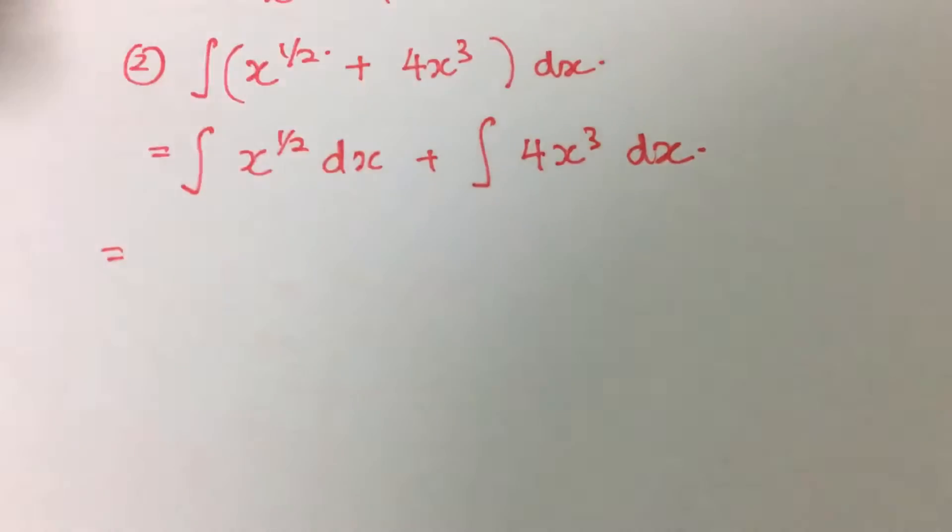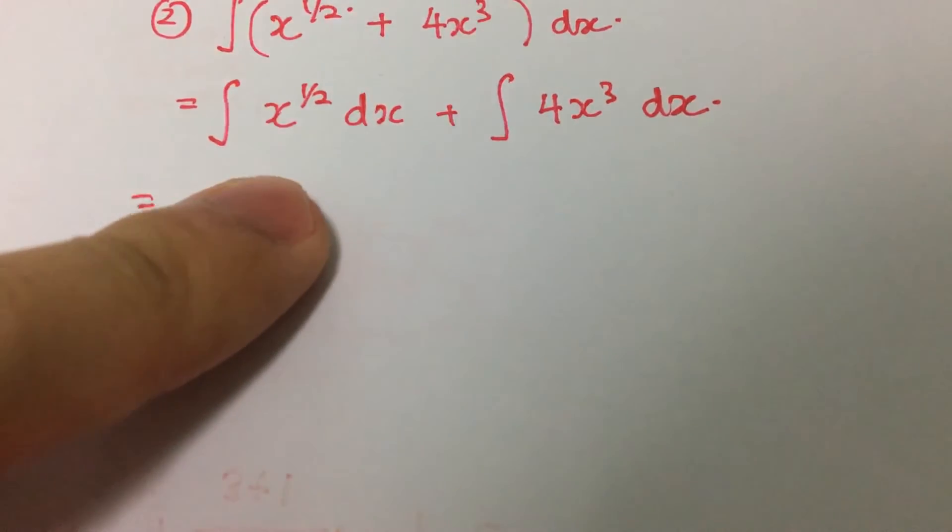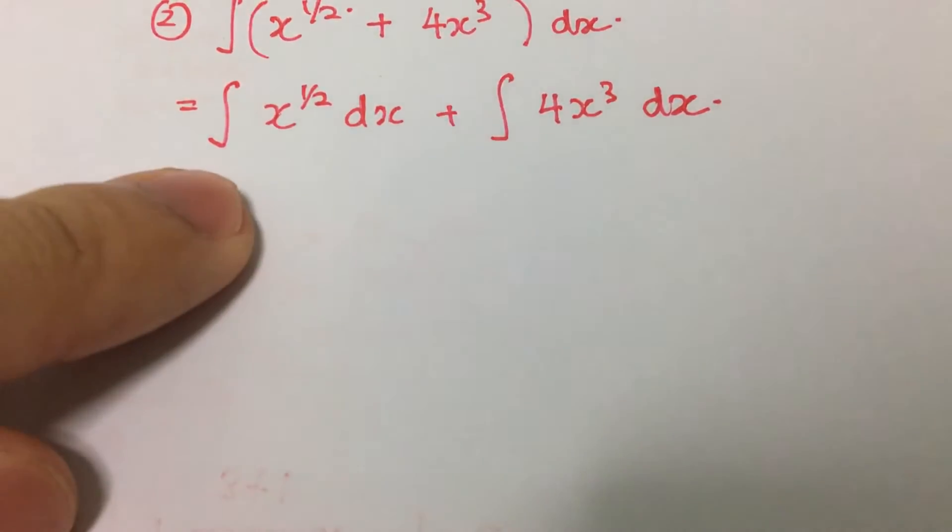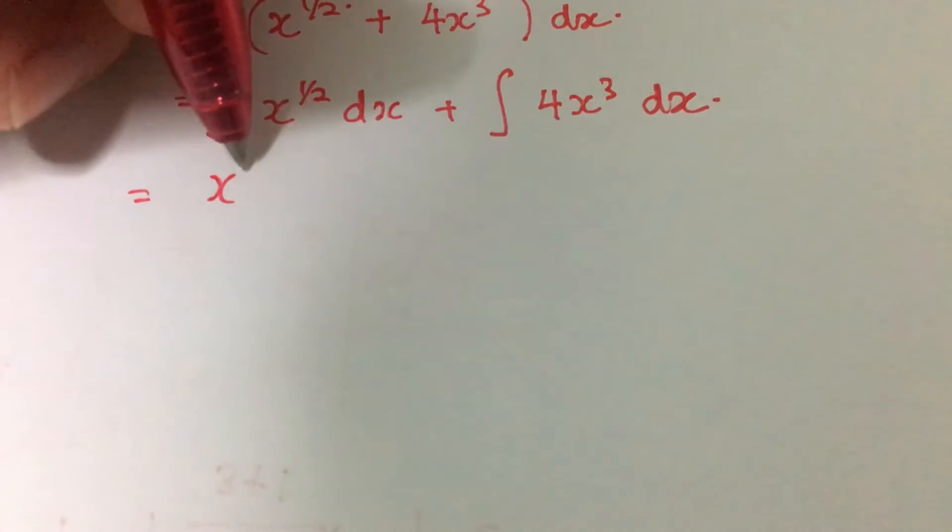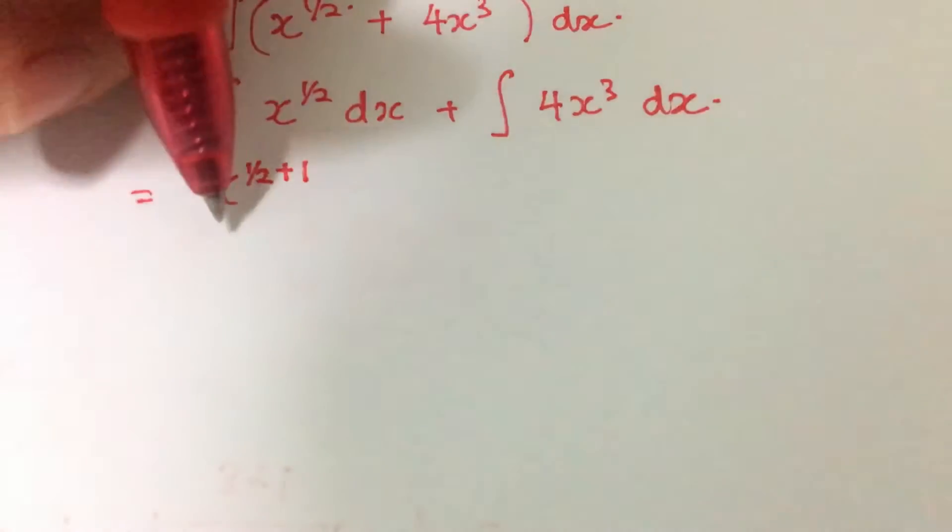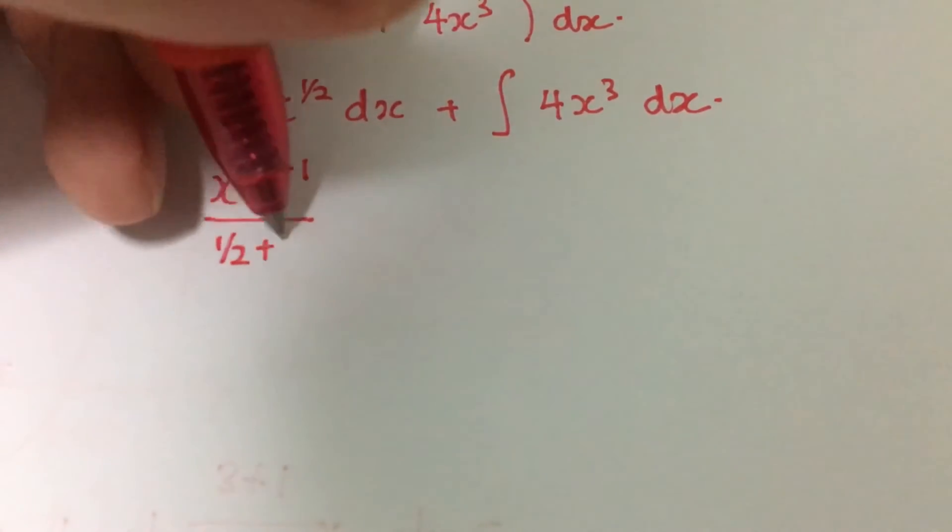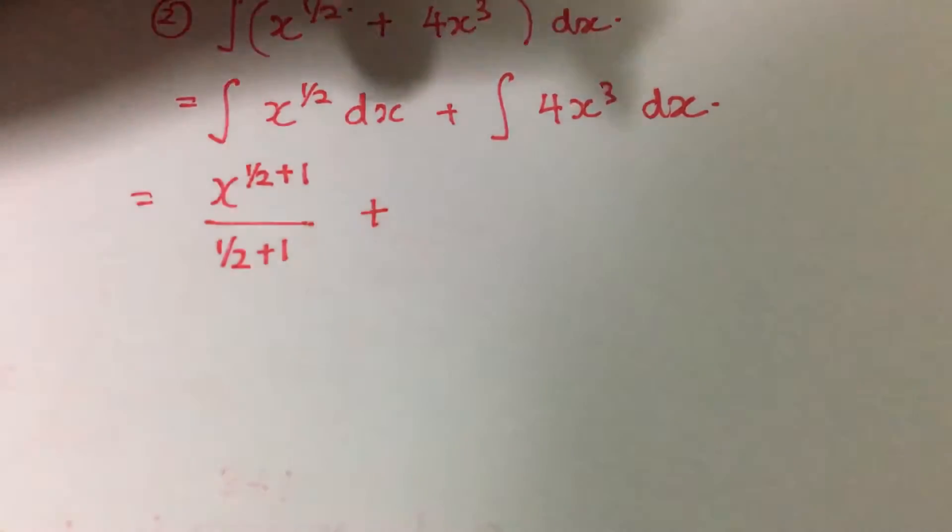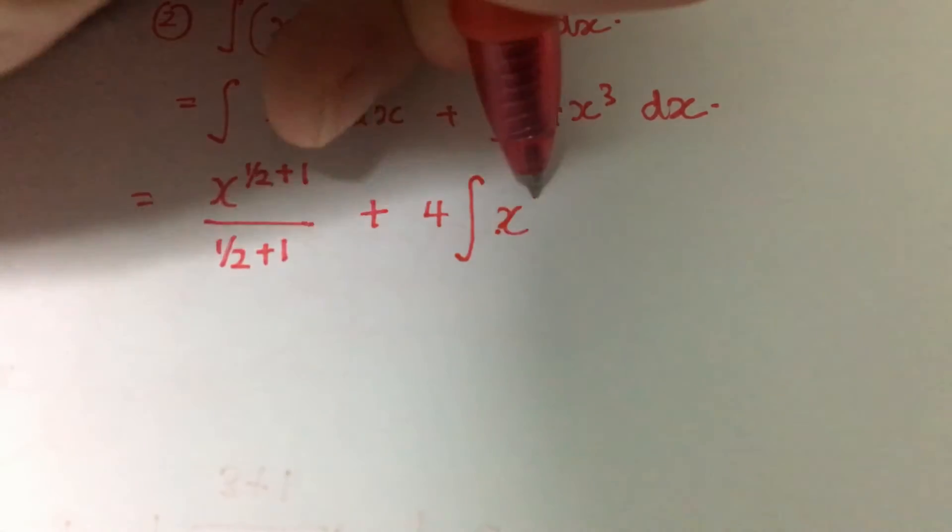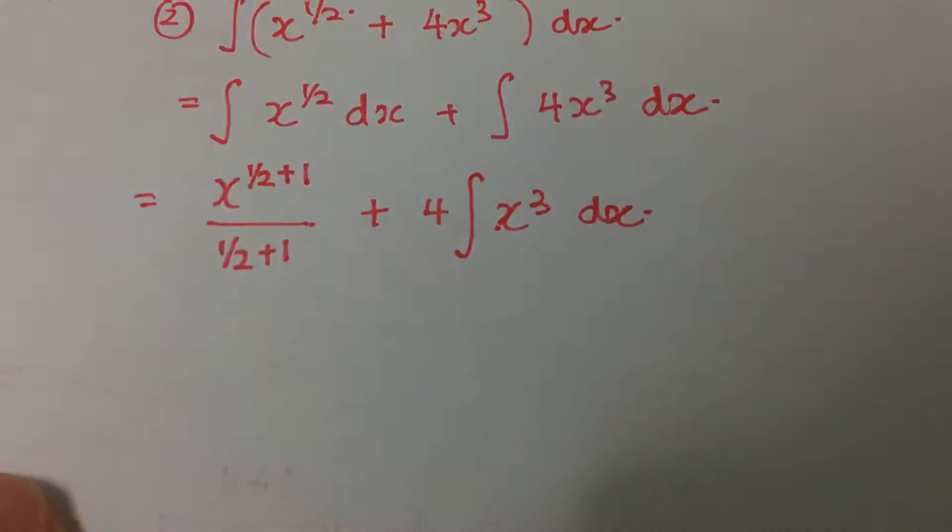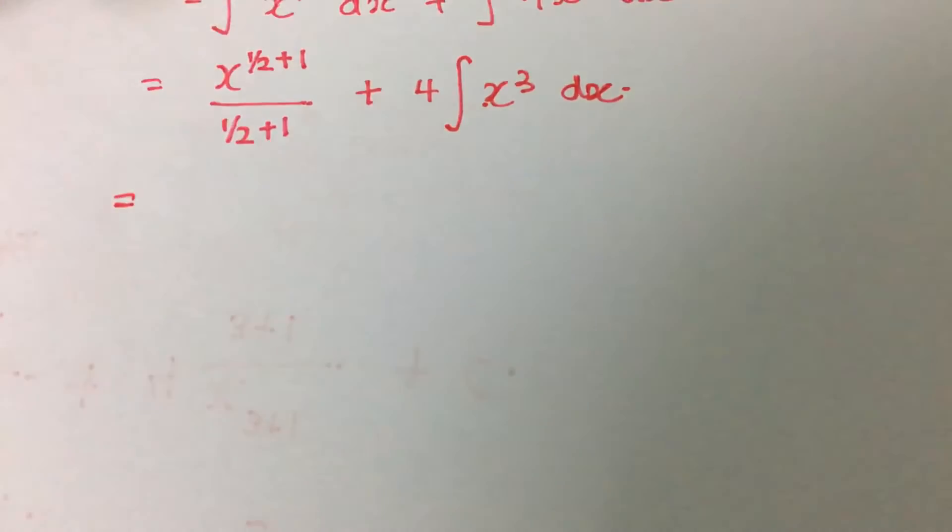The next thing we will do, same thing, because this one deals with power. When we integrate x to the power of half, we simply add plus 1 to the power, and at the same time we divide by the total power, so that will be half plus 1. For this one, first thing first, we shift the constant up to the left hand side of the integral sign, so that will be 4 integral x cubed dx.